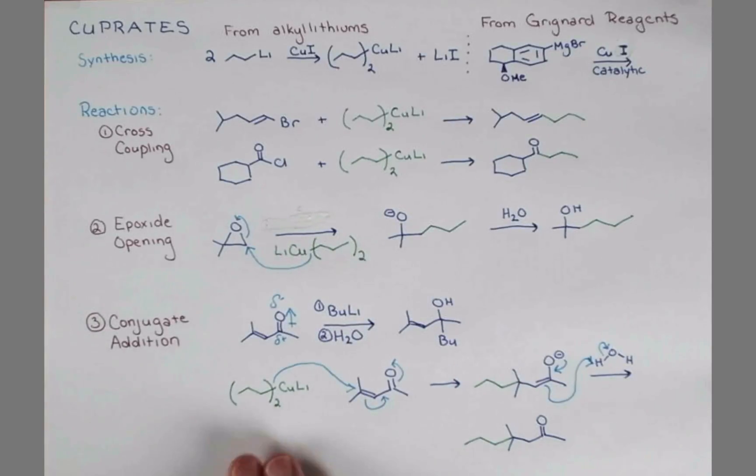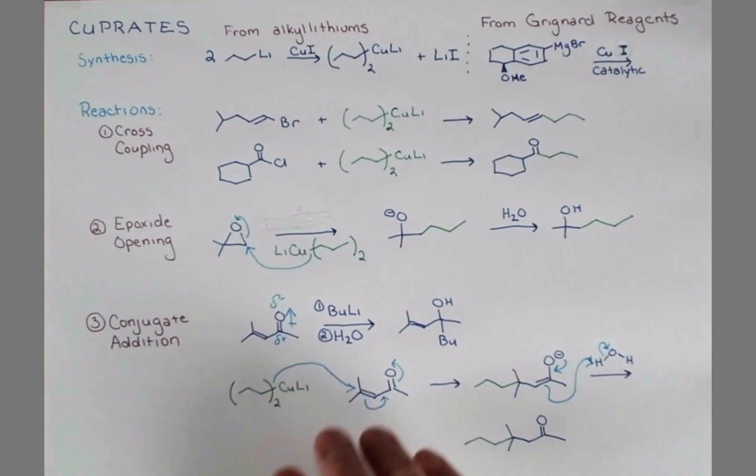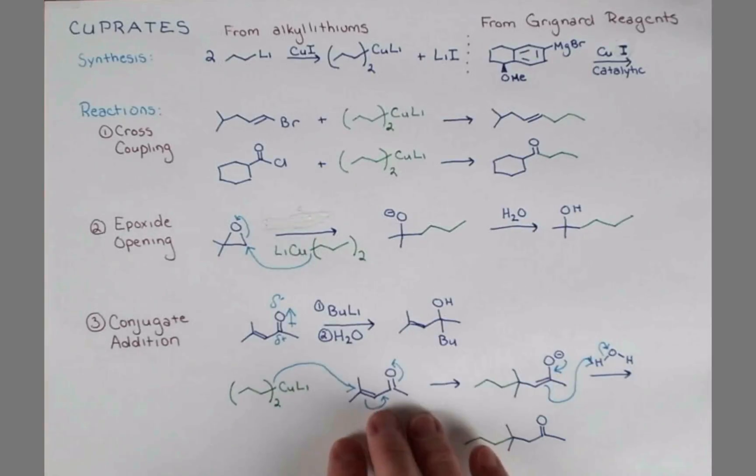Whereas the cuprate has a lot less ionic character. It has more covalent character in this carbon-copper bond. So this reaction is actually governed by orbital overlap. So we get good orbital interactions with this soft nucleophile at this terminal carbon atom. The differences in reactivity here are pretty cool.